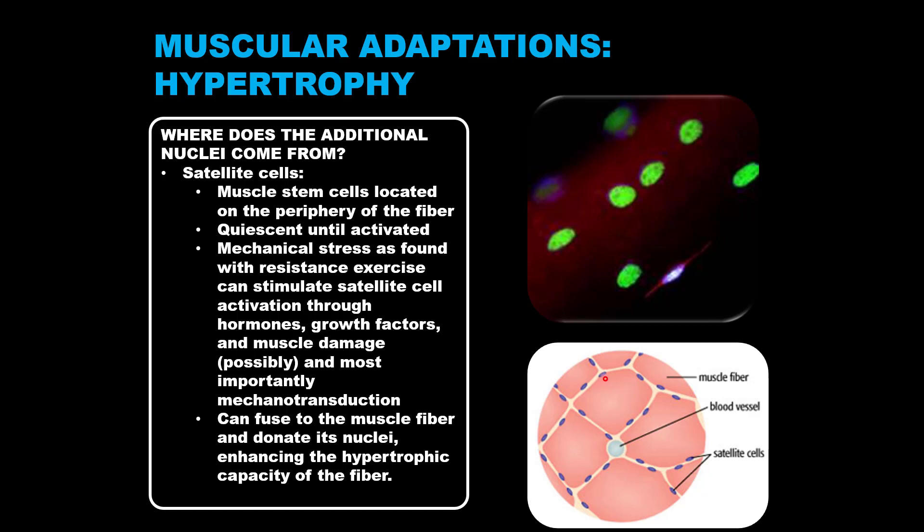There are multiple stimuli for satellite cell activation, and they are all somewhat related to resistance training. For example: muscle damage, hormones like testosterone, growth factors like insulin-like growth factor 1 or IGF-1, and most importantly, mechanotransduction. Mechanotransduction is a process in which a mechanical stressor like elevated muscle tension is turned into a signal that the muscle fiber can detect, which is transduced to a biochemical signal that stimulates protein synthesis and wakes up these satellite cells.